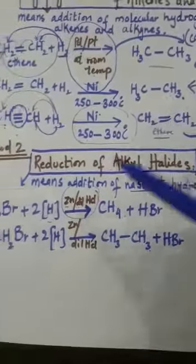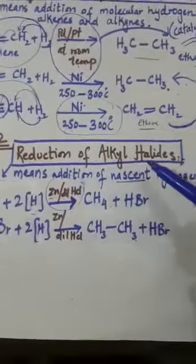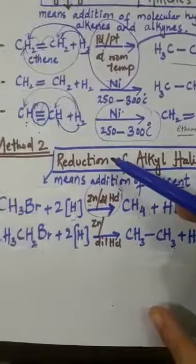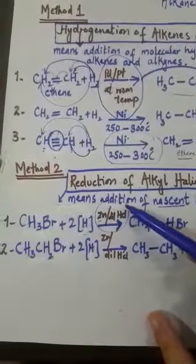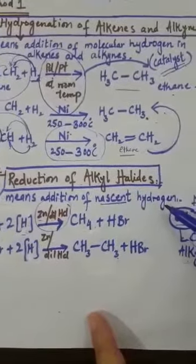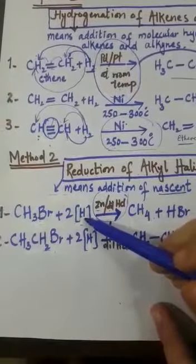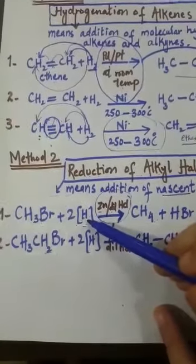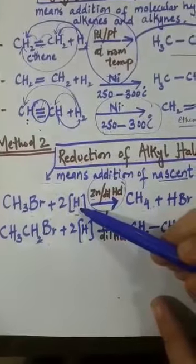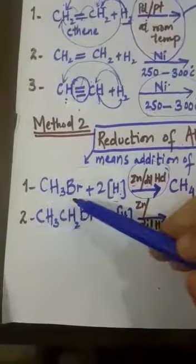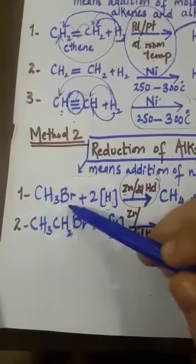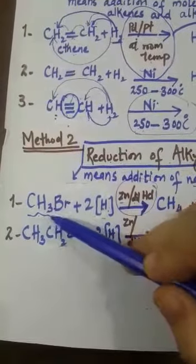And the second method is reduction of alkyl halides. Reduction means addition of nascent hydrogen. Nascent hydrogen is single atomic or monatomic hydrogen atom that adds into alkyl halides.